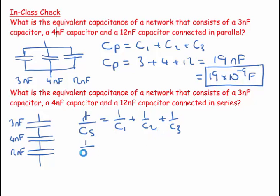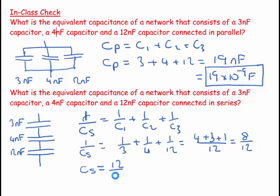And so we end up with 1 over CS is equal to 1 over 3 plus 1 over 4 plus 1 over 12, which equals 8 over 12. Now here's the thing: this is 1 over CS. So CS is going to equal 12 over 8, which equals 1.5 times 10 to the minus 9 farads.